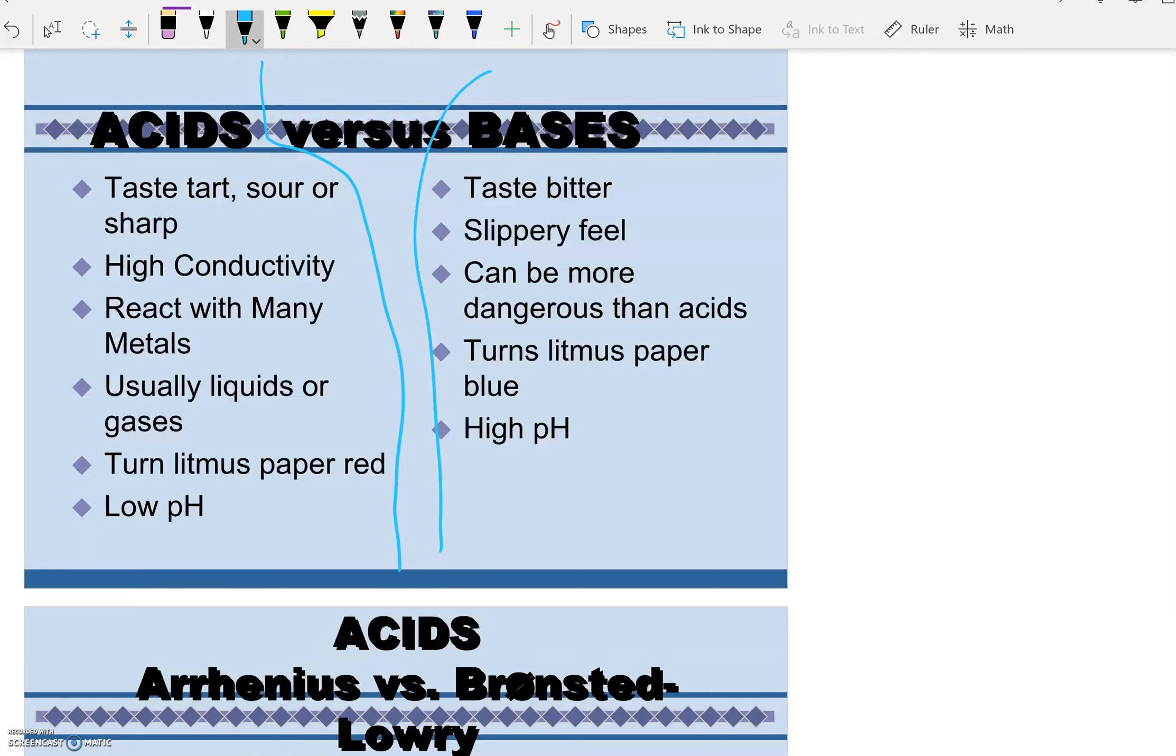Acids are sour like lemons. They conduct electricity. They are typically reactive with metals. They're liquids or gases. They turn litmus paper red and they have a low pH.